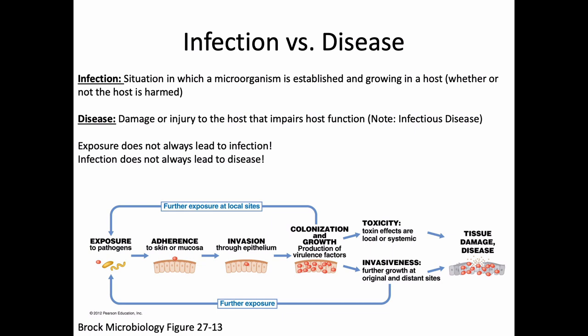Disease is some kind of damage or injury to the host that impairs host function — sometimes defined as getting out of homeostasis. There are diseases that have nothing to do with infection, like Alzheimer's disease, diabetes, or sickle cell anemia. There are also times when you are infected with a microbe but you do not have disease. Just because you're in contact with a microbe doesn't mean you're going to get infected, and just because you're infected doesn't mean you're going to have disease.